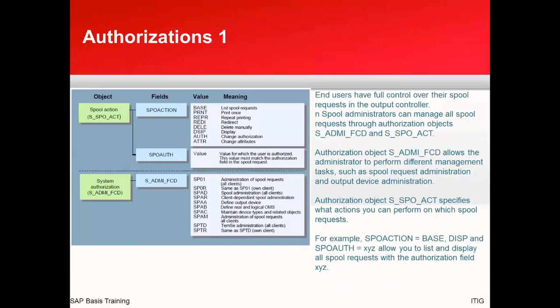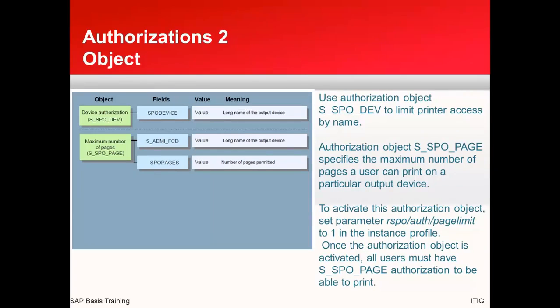Here you can see the different authorization objects a user should have to perform printing, as well as another list of authorization objects for when you have set up control on the number of pages a user can print. That's what I wanted to cover, and in the next section we'll be covering the live demo on how to perform maintenance and administration of printers. Thanks for joining and have a nice day. Bye-bye.